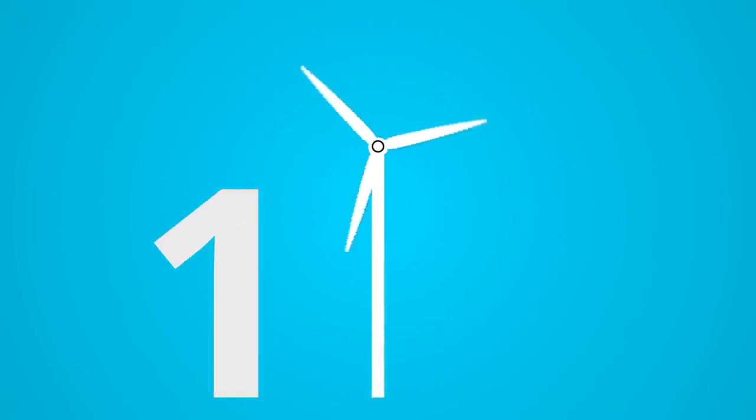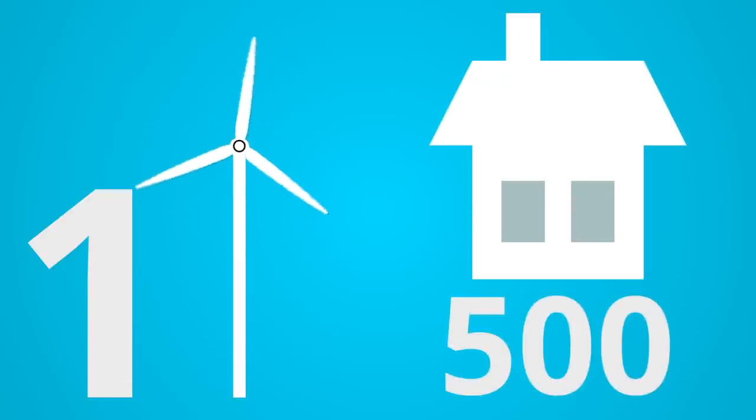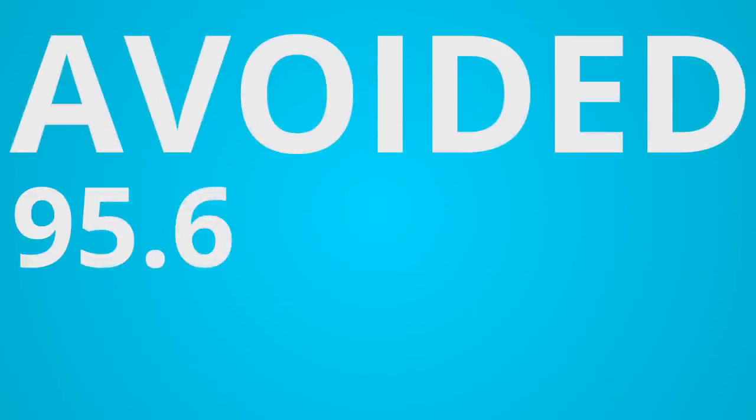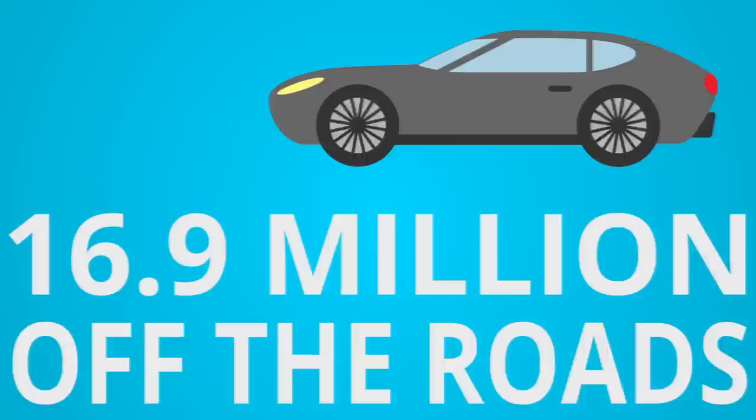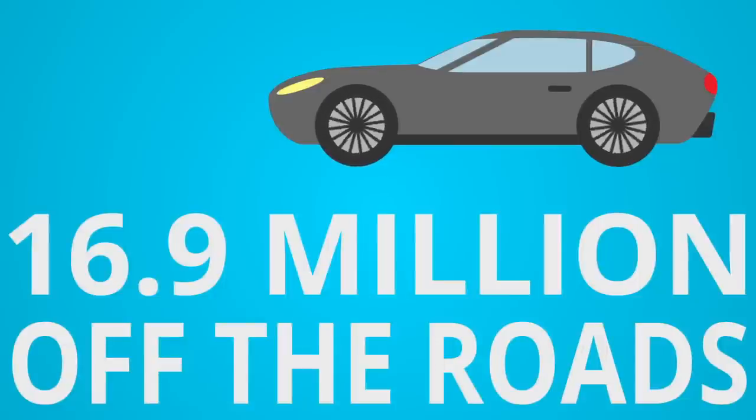A single one of those turbines can power 500 homes, and in 2013 alone, wind energy avoided 95.6 million tons of CO2, or about the same as taking 16.9 million cars off the roads. That's a lot of sports cars.